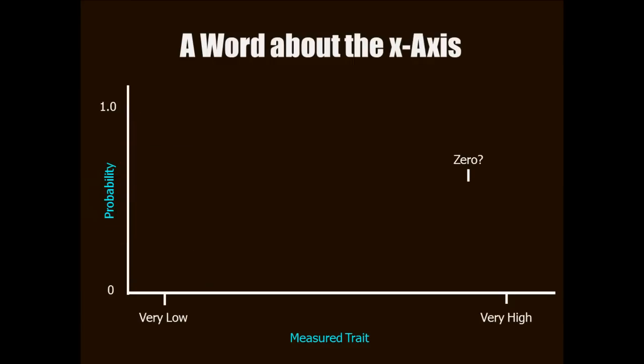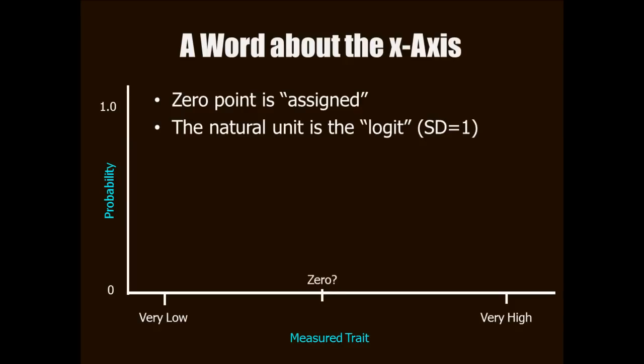For the x-axis, there's no natural zero point. It has to be assigned. Some IRT software programs assign a value of zero to the mean of trait level in the sample that you happen to be using. The natural unit for IRT models is the logit, and has a standard deviation of 1. Now a logit is just used for mathematical convenience. It's a natural unit because it's based on probability. In IRT models, it's based on probability.